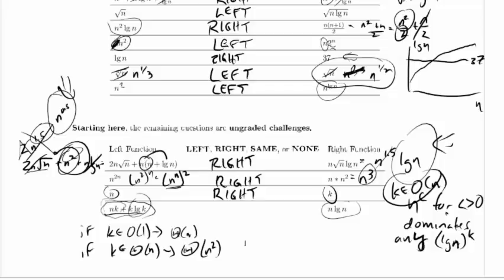So on the top end, this is actually slower than this term over here, it dominates. But on the bottom end, it's faster. So as a result, we're not going to be able to say anything. The left one's not big O of the right one, the right one's not big O of the left one. We just don't have enough information about the relationship between n and k. So we're going to say NONE here.